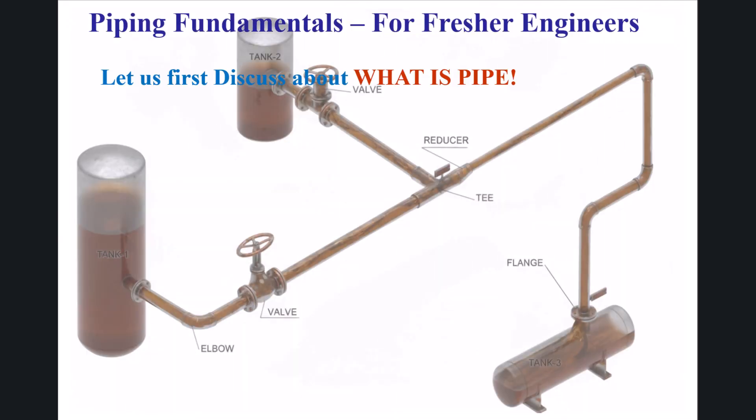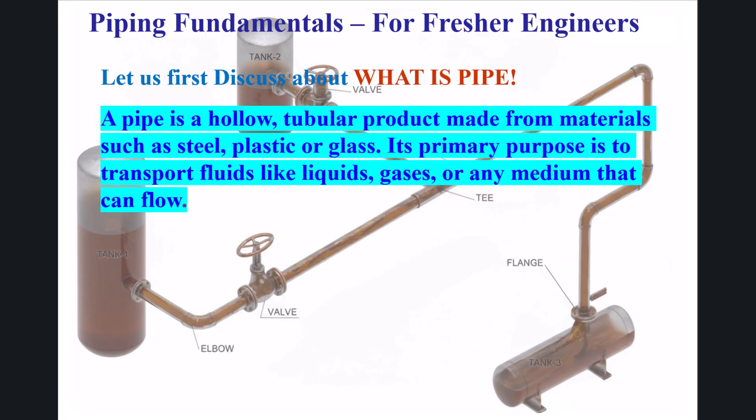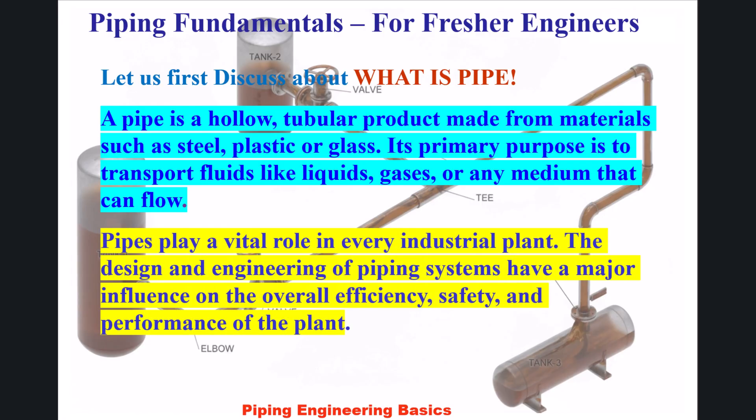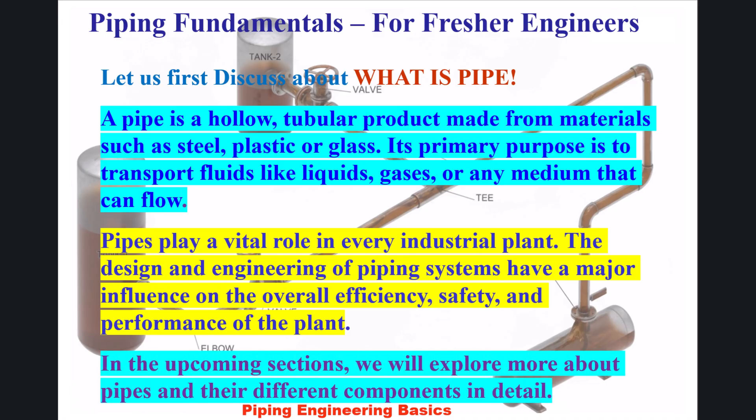A pipe is a hollow tubular product made from materials such as steel, plastic, or glass. Its primary purpose is to transport fluids like liquids, gases, or any medium that can flow. Pipes play a vital role in every industrial plant, and the design and engineering of piping systems have a major influence on the overall efficiency, safety, and performance of the plant.